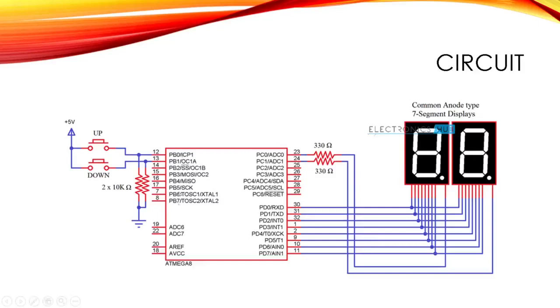This is the ATMEGA controller. We can see here two 330 ohm resistors are connected to PC0 and PC1, and two 10K ohm resistors are connected to PB0 and PB1 and which are connected to the ground.